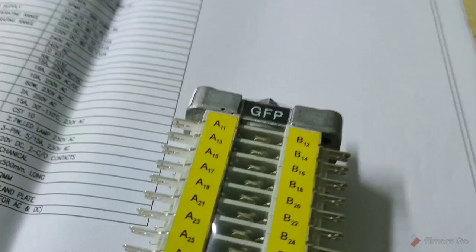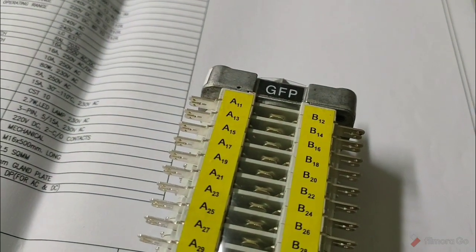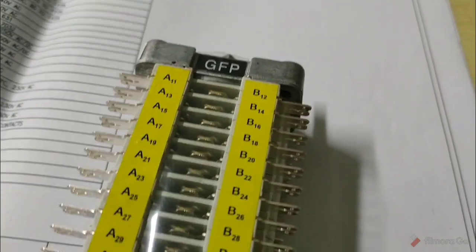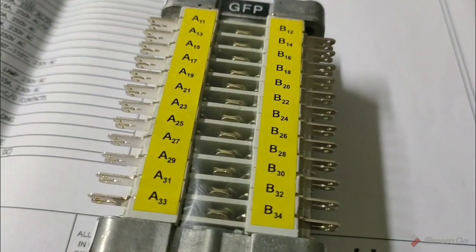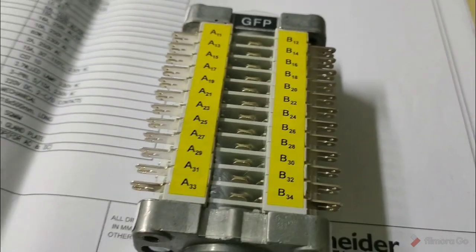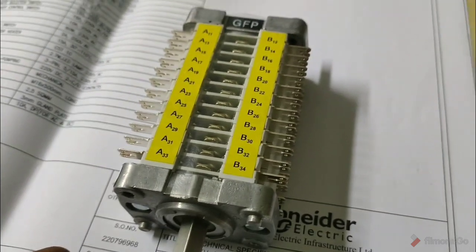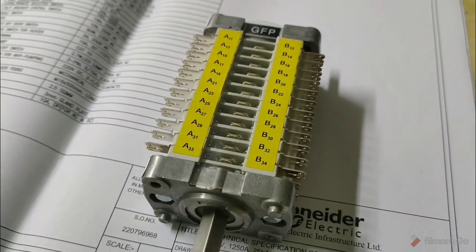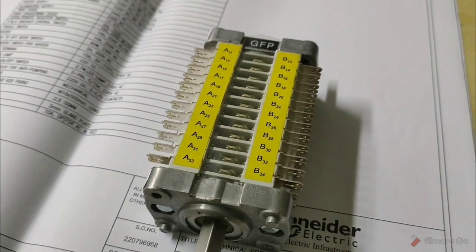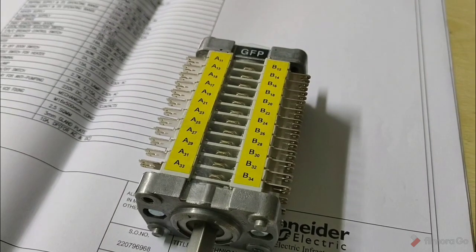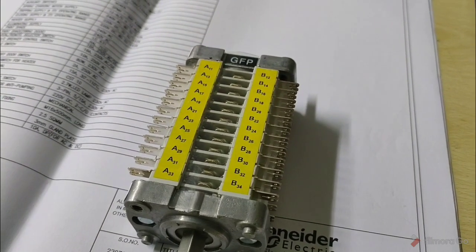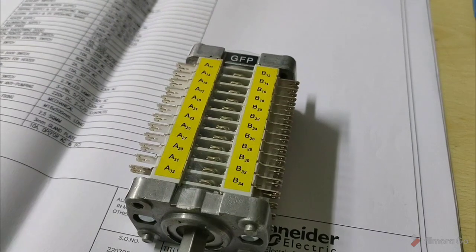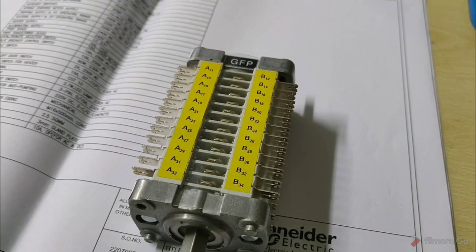The marking here shows GFT. Now, if we want to check that this auxiliary switch has 12 NO and 12 NC contacts, I'll show you how to test these contacts.